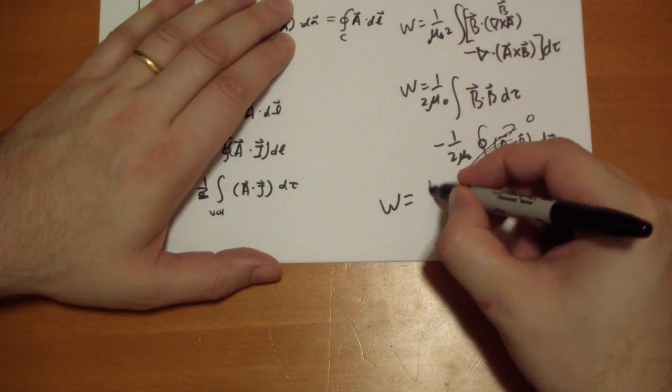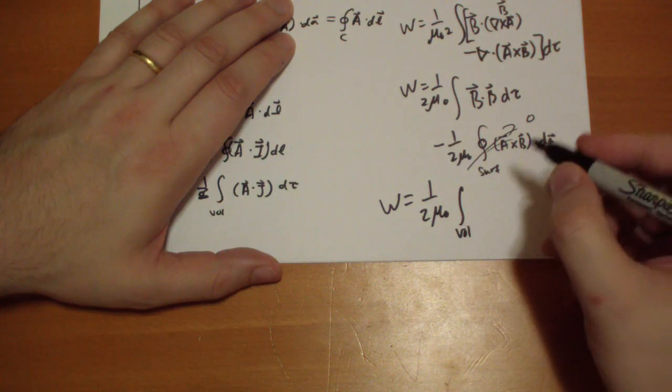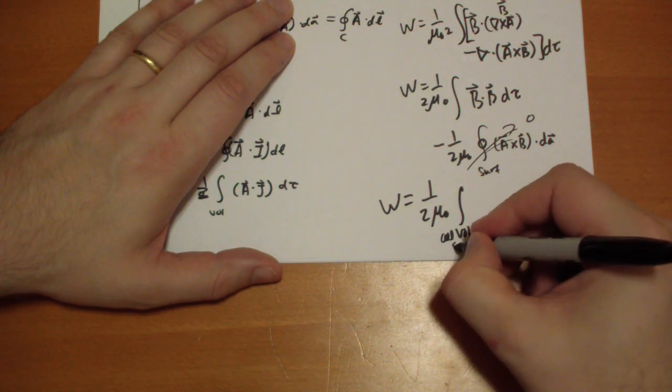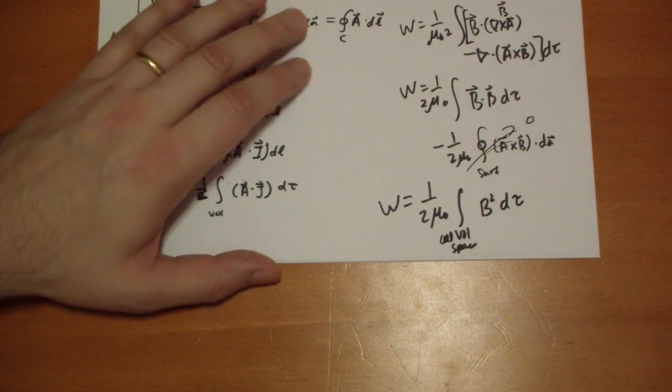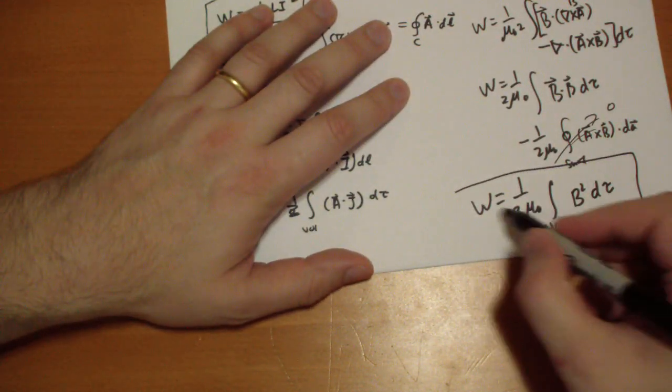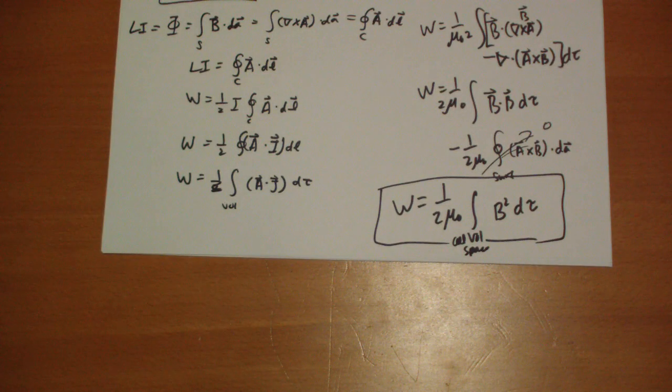So then we end up with this formula, that work is equal to over all space, one over two mu naught B squared d tau. So the work it takes to build up a magnetic field in space is just B squared times the volume.